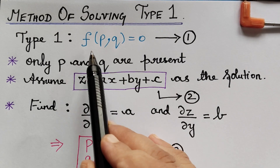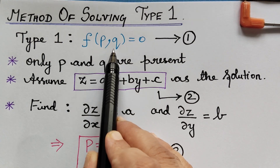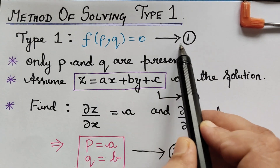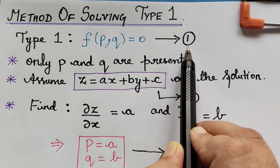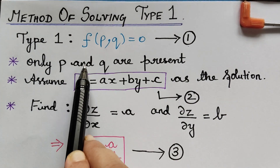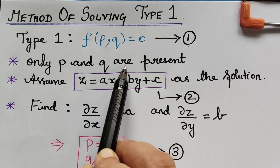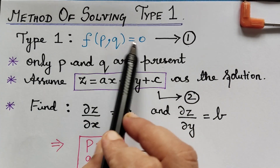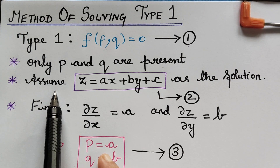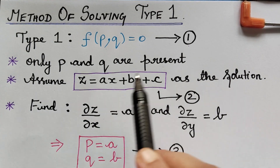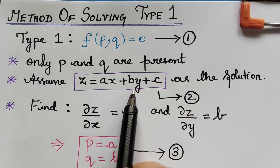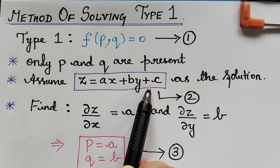The type 1 equation f of p, q is equal to 0 has to be first marked as equation 1. In this equation, only p and q will be present. For this equation, the first step is we have to assume that its solution is of the form z equal to ax plus by plus c, and we have to mark it as equation 2.